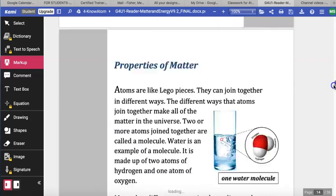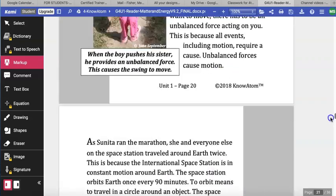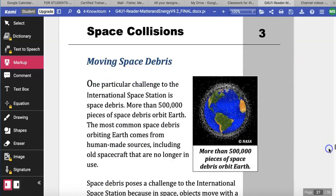If you're using Kami, you can use the markup tool to highlight or you can use your physical textbook and a highlighter or at least a pencil to follow along. Alright page 27, Space Collisions.